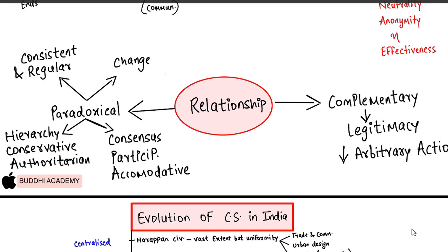यह authoritarian governance system wishes and demands of individual citizens के against होता है। इसी के साथ इनका जो outlook होता है वो conservative होता है। आपने सुना होगा कि IAS officers ज्यादा change नहीं होना चाहते - इसी कारण से हमको civil services reforms और administrative reform commissions लाने पड़ते हैं।